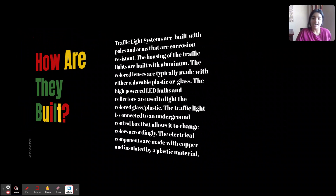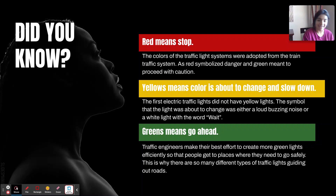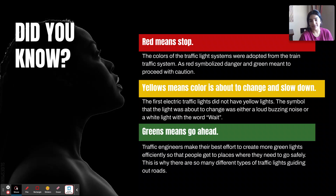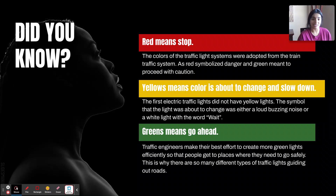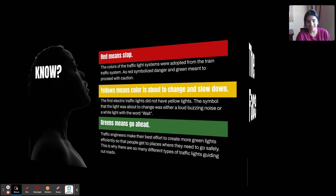Did you know — most of you who drive know that red means stop, yellow means the color is about to change so slow down, and green means go ahead. These were actually adopted from train traffic symbols, but the yellow was actually originally a white. The first electric traffic light did not have yellow lights — the symbol that the light was about to change was either a loud buzzing noise or a white light with the word 'wait.' So one of the first traffic lights basically had just two lights, red and green, and then it would make a huge noise to signal that it was going to change colors.